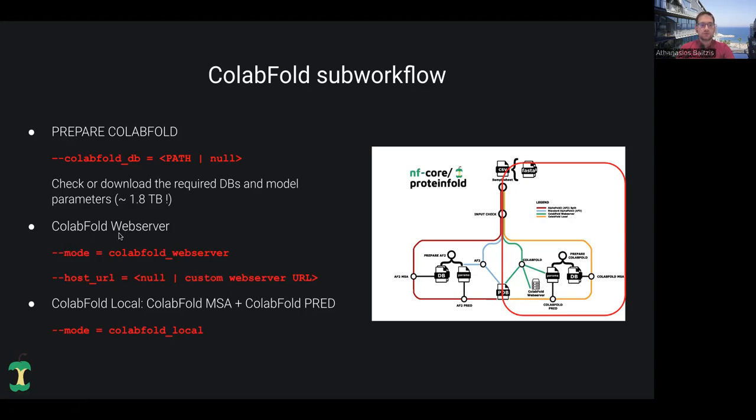In order to specify the ColabFold web server mode, you just have to use the mode parameter. The second mode is the ColabFold local mode, and it's quite similar to the AlphaFold split mode we have seen in the last slide, in the sense that you first have a process to compute the input multiple sequence alignment using MMseqs, and then you have a separate process for the model inference and protein structure prediction. Again, you can specify it using the mode parameter of the pipeline.